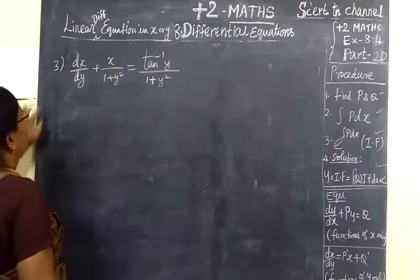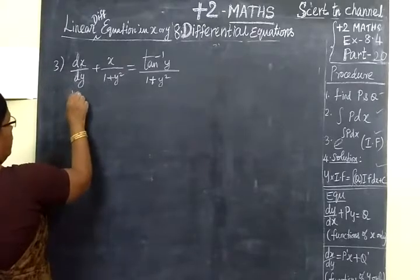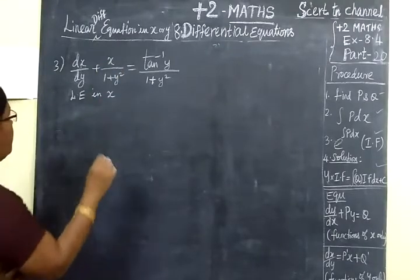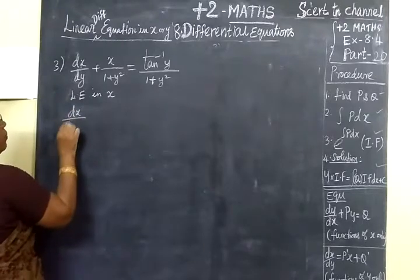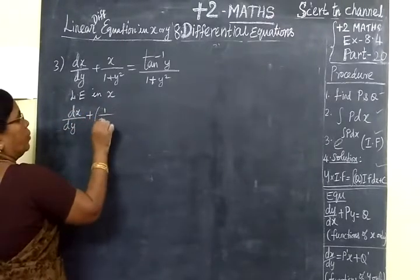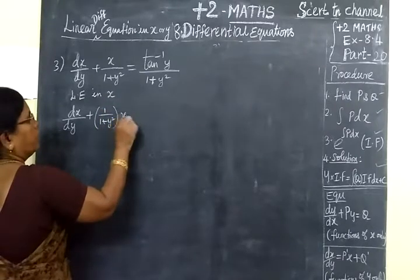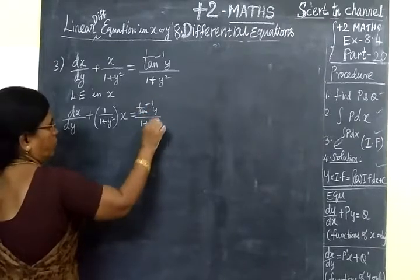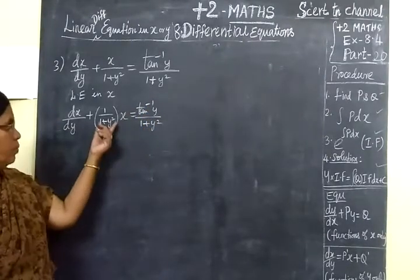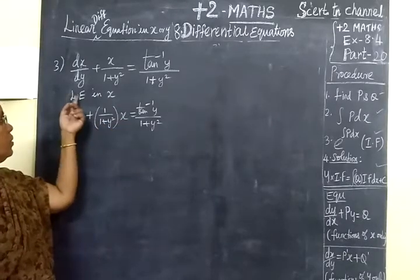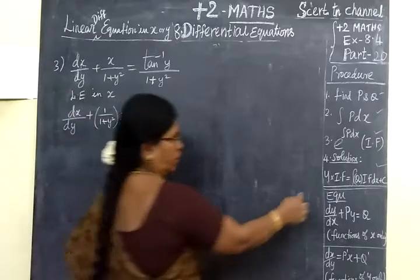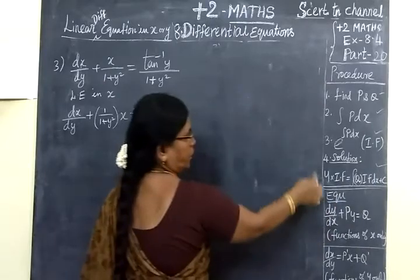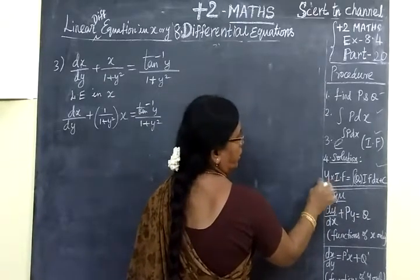Now in part 20, we see the third sum. This is a linear equation in x — so this is a linear equation in x. Now this is easy to solve. The equation is: dx/dy plus (1/(1+y²))x equal to tan⁻¹y divided by (1+y²). This is a linear equation in x.